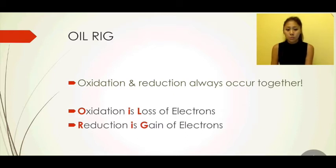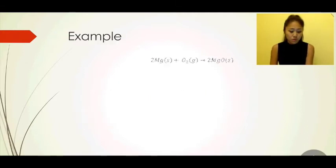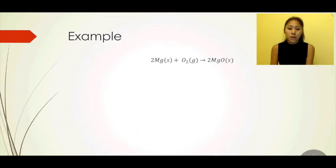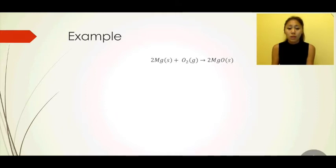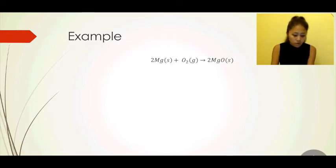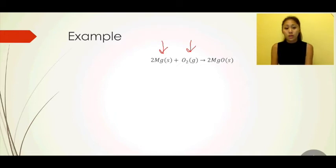Now we're going to look at an example of magnesium and oxygen reacting to form magnesium oxide, and how OIL RIG can be incorporated in this reaction. Here is magnesium and oxygen, and this is our balanced equation. In order to write half equations, we look at the reactions to see what species are oxidized and what species are reduced.